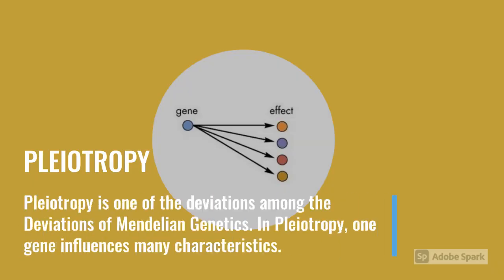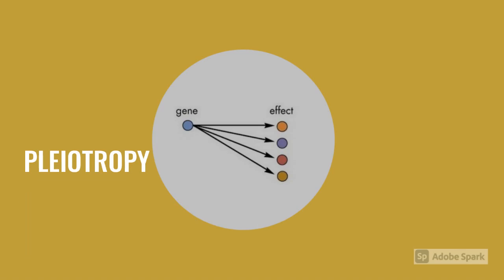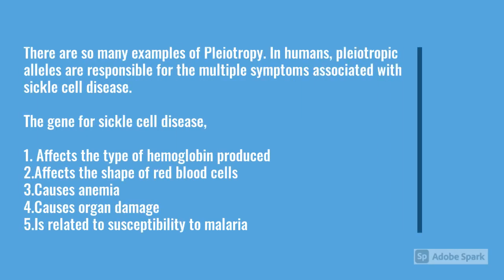Pleiotropy is one of the deviations from Mendelian genetics. In pleiotropy, one gene influences many characteristics. There are many examples of pleiotropy. In humans, pleiotropic alleles are responsible for the multiple symptoms associated with sickle cell disease.